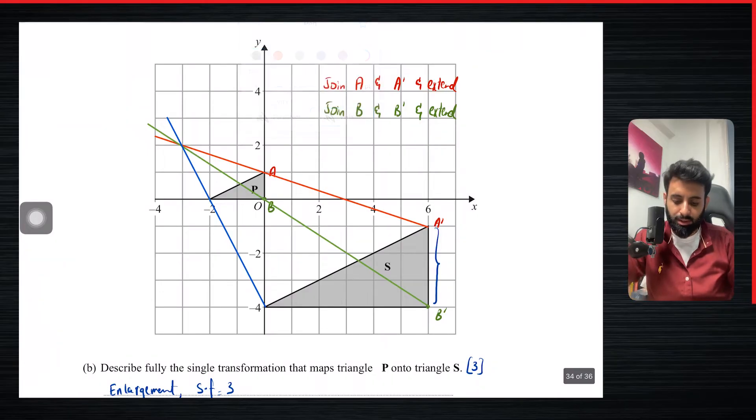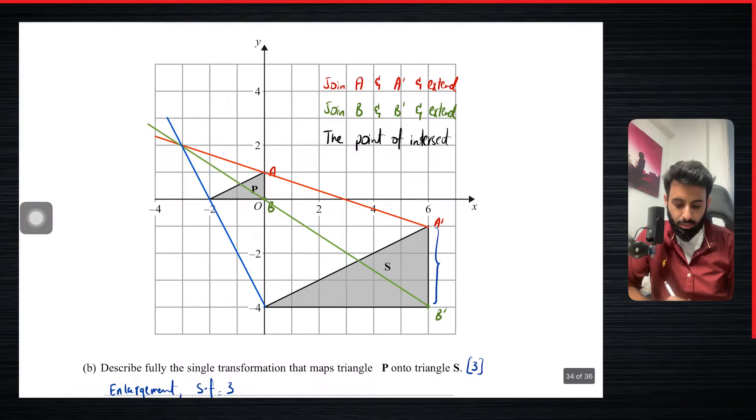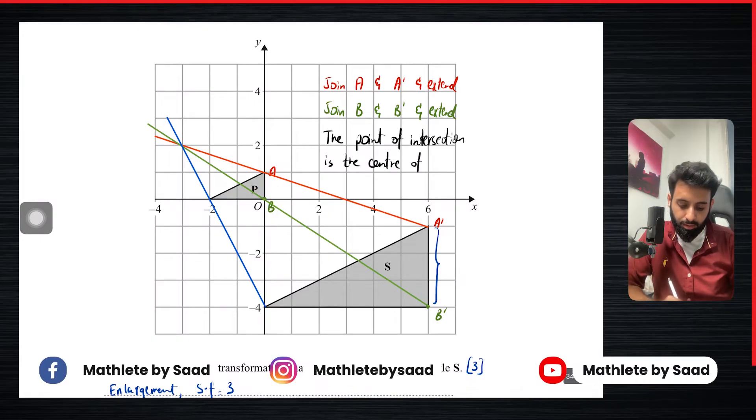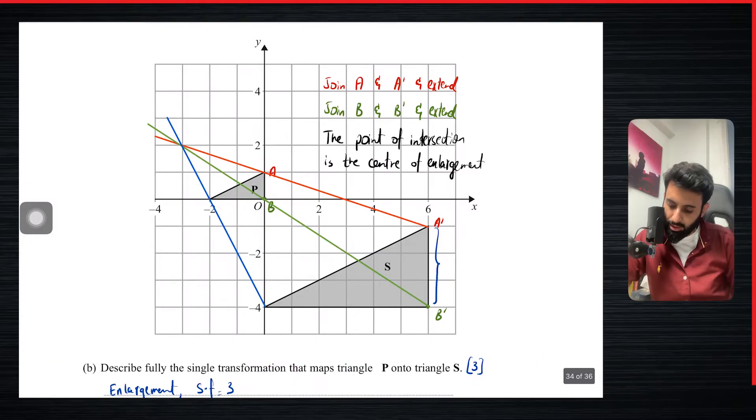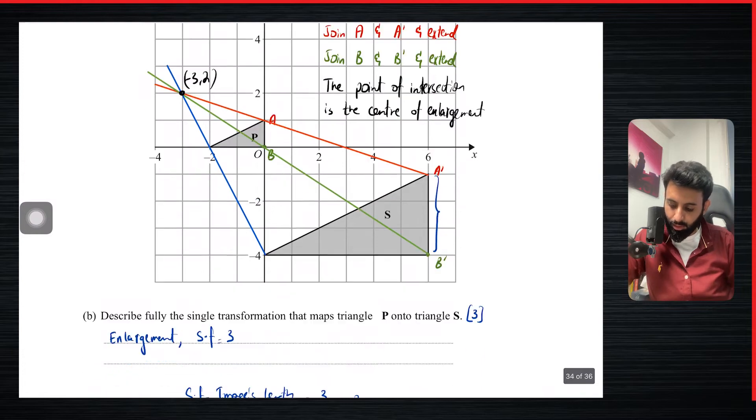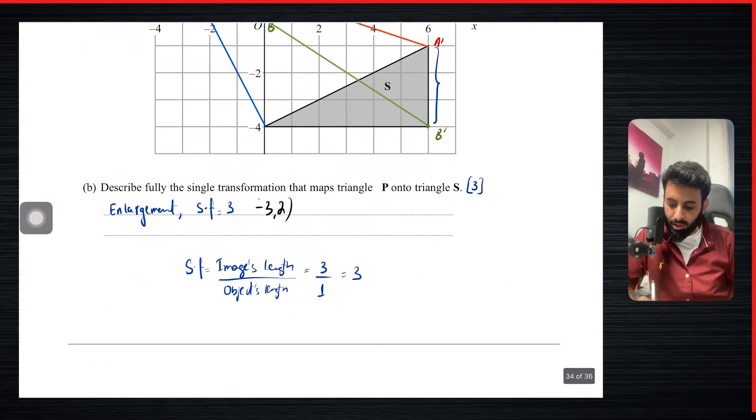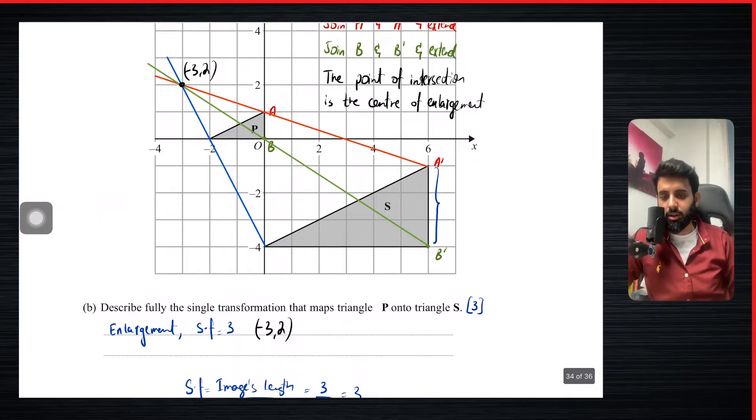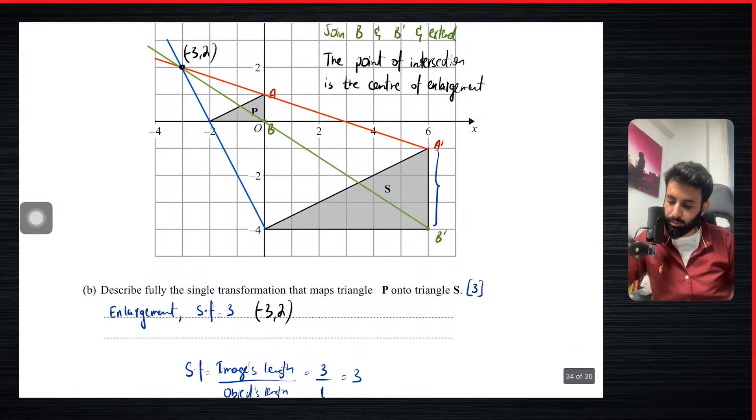So the third and the final step is that the point of intersection, the point of intersection is, yep, you guessed it again, is the center of enlargement. And what is this point? This point has coordinates minus three comma two, there you go. So we write down the missing piece of the puzzle. And that's minus three comma two. And that gets you three marks, hopefully.